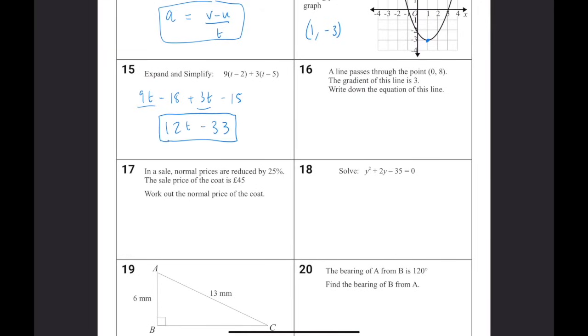A line passes through the point 0, 8. The gradient of this line is 3. So we want to think of MX plus C when it comes to this. M is the gradient, so that's going to be the 3. And this coordinate here, 0, 8, is actually on the Y axis, so that's going to indicate our Y intercept. So it's going to be Y equals 3X plus 8.